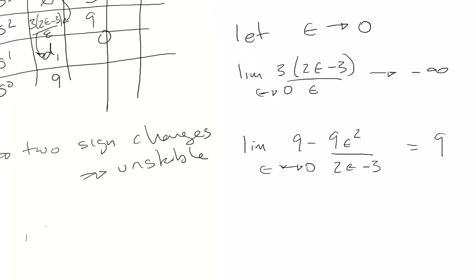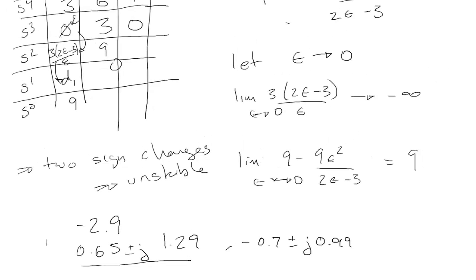I would find that from MATLAB, we find that the poles are at minus 2.9, 0.65 plus or minus j times 1.29, and minus 0.7 plus or minus j times 0.99. So indeed, we see that there are two poles in the right half of the complex plane. The system would be unstable.